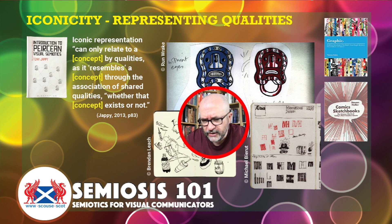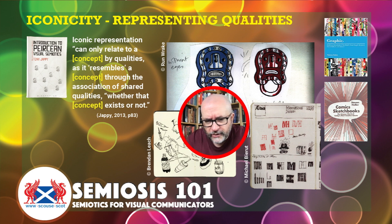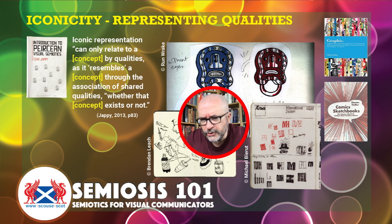Then we've got Michael Beirut's little sketches of letter forms — just very quick little thumbnail sketches. But those little lines put down in a particular way iconically connect to letter forms that we know, like the M. We can see an M there being sketched out; it's still something that resembles an M. It's got the qualities of an M — the uprights, the diagonals — it resembles an M, and from that we can make an interpretation that they are M's.